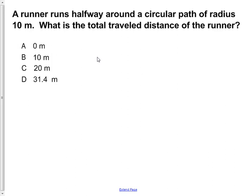A runner runs halfway around a circular path of radius 10 meters. What is the total travel distance of the runner?